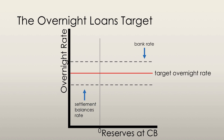The settlement balances rate is the interest rate that a central bank pays on reserves held in its accounts, and it is set at 0.25% below the target overnight loans rate. It acts as an absolute minimum value that the overnight loans rate could take. Banks wouldn't make overnight loans to other banks unless they earned a higher interest rate than what the central bank is offering on its reserves. No bank would charge a lower interest rate than the settlement balances rate because it could simply earn more interest by leaving its money in its reserve account. This entire range — the area between the bank rate and the settlement balances rate — is known as the operating band. The overnight loans rate will be somewhere within this operating band.